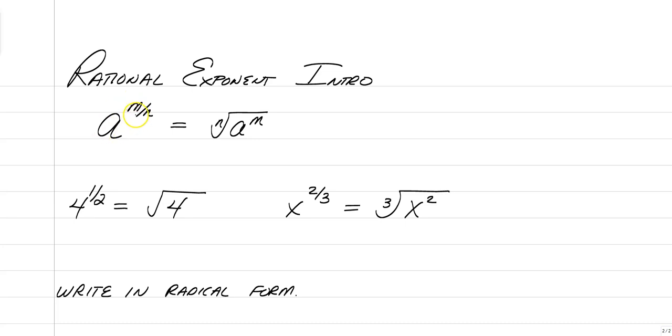So if you have a fraction for an exponent, the numerator is actually the exponent of the variable and the denominator is actually the index of a radical that you are taking.